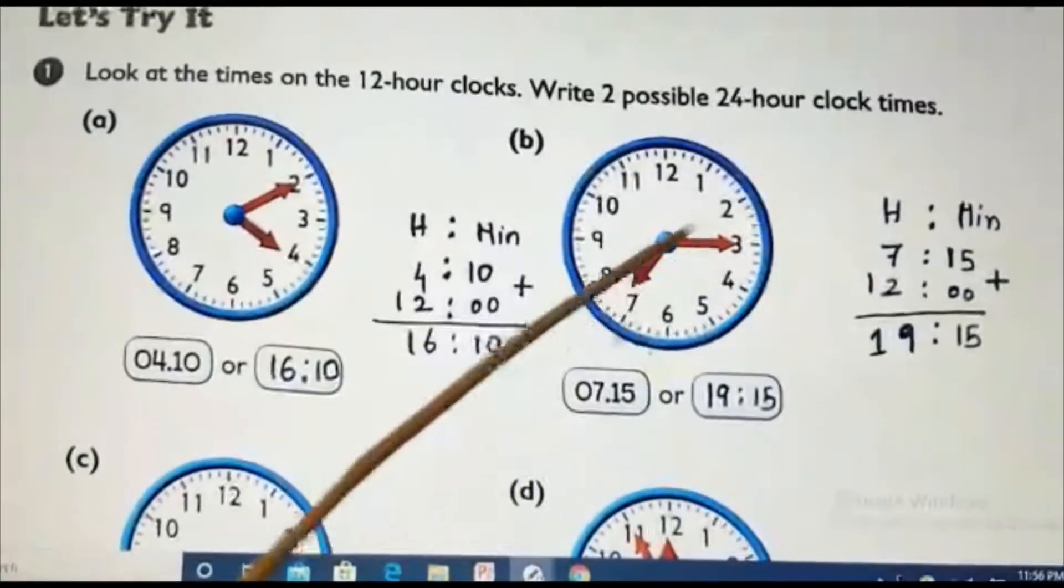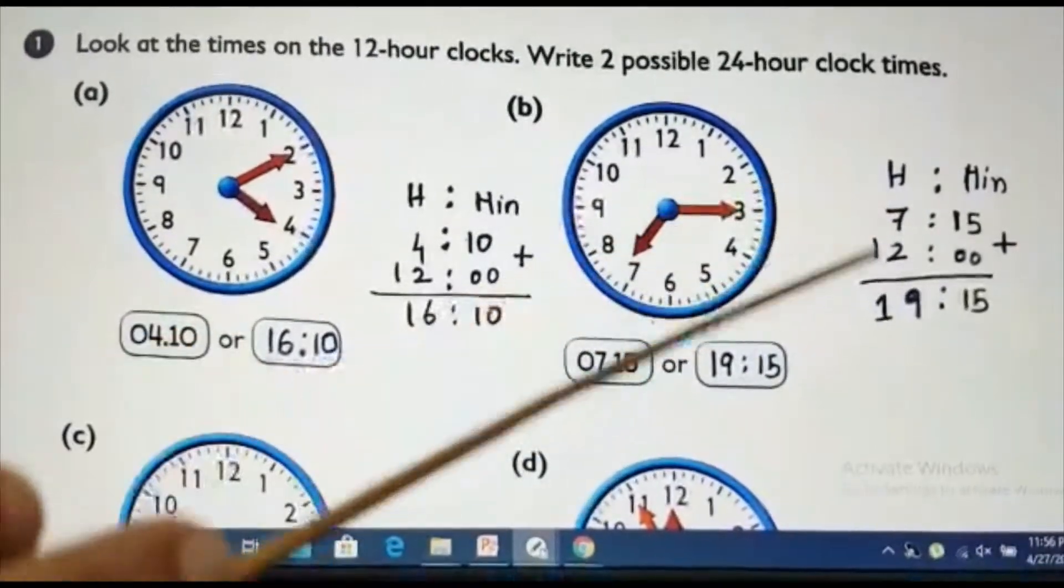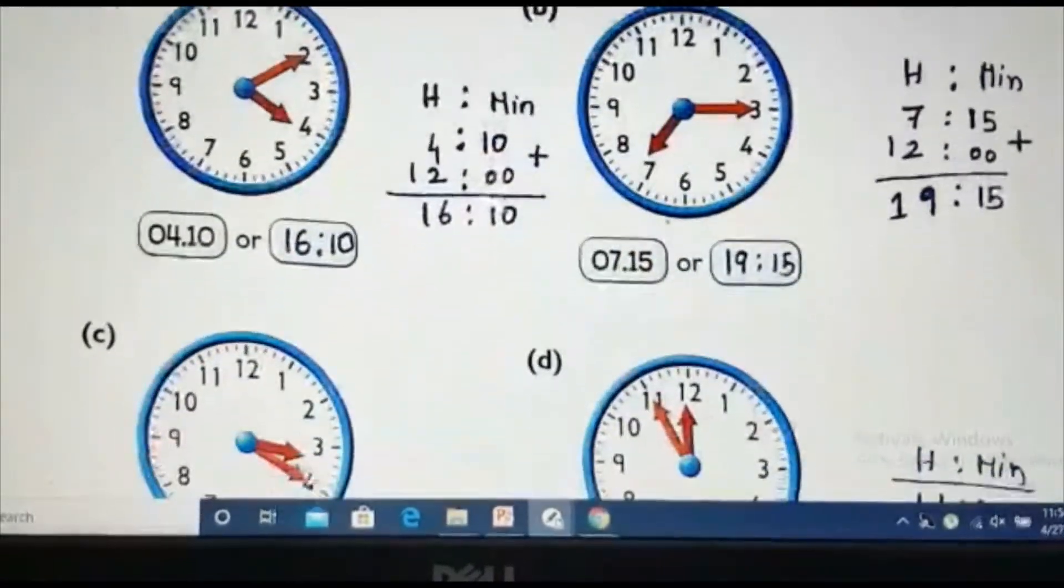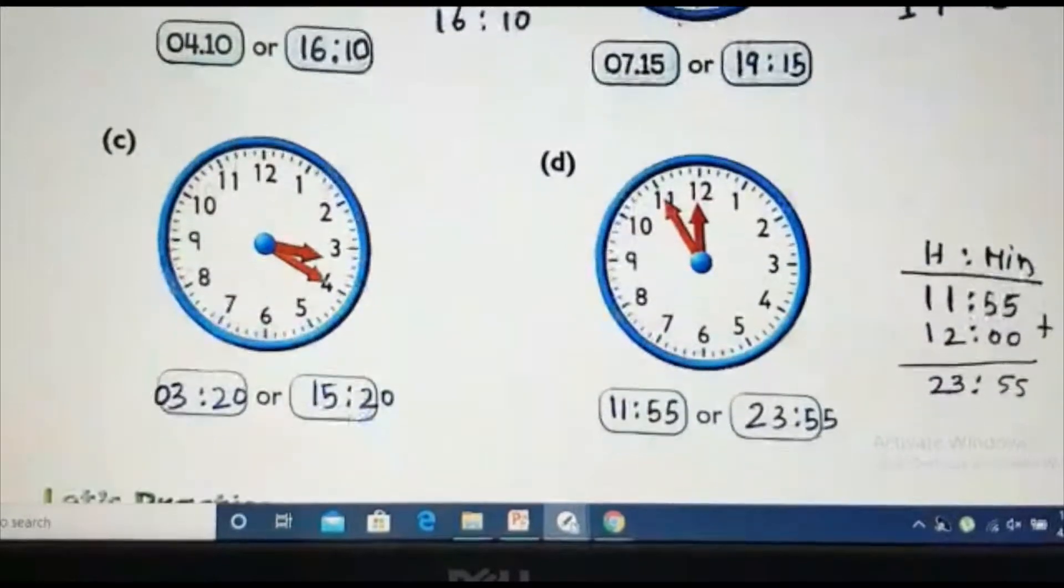Same here. 7:15. So, what I should do? One is 7:15. The other one will be plus 12 in the hours side. Nothing in the minutes side. So, it is 19:15. Okay. You check your answers. Please, don't check your answers first. After doing, you check the answers. Okay.